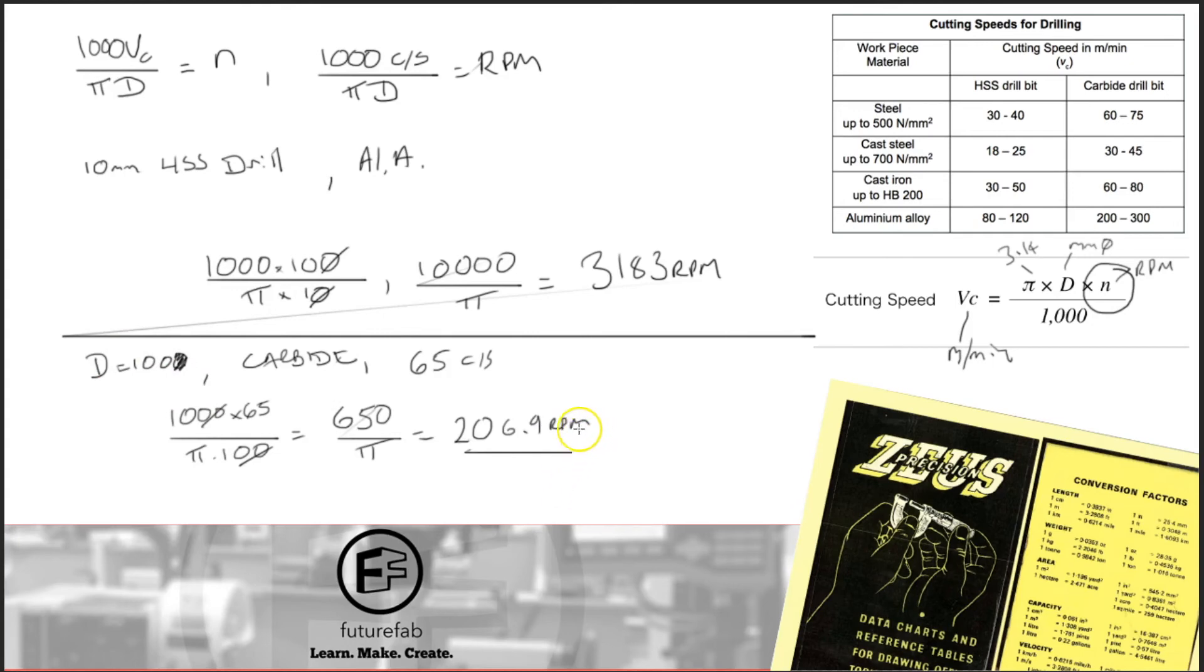So in this particular case, with a 100 mil piece of steel, with a carbide cutter in the lathe, we've got 206.9 RPM. Obviously, in a lathe gearbox, you would just select the nearest value to that.